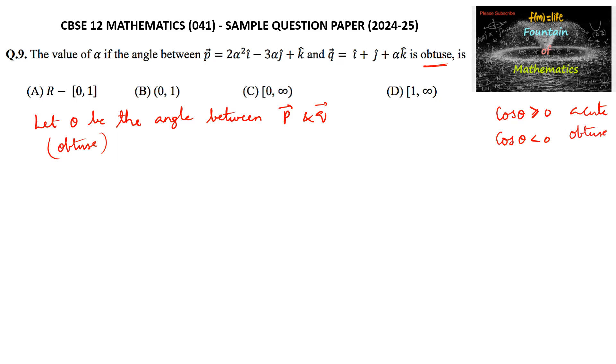So for obtuse angle we need to consider cos theta is negative, which implies cos theta is less than 0. That is, p dot q (dot product) should be negative.